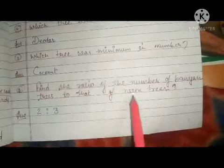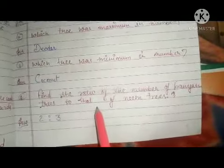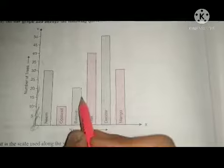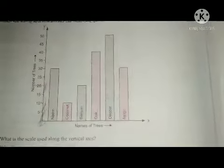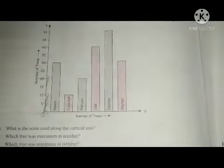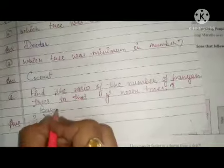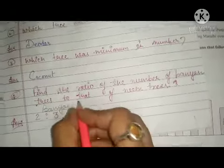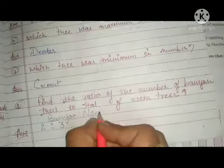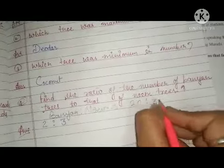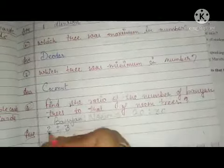Find the ratio of the number of banyan trees to neem trees. The banyan tree count is 20 and the neem tree count is 30. So the ratio is 20 to 30. If we divide both by 10, the ratio will be 2 to 3.